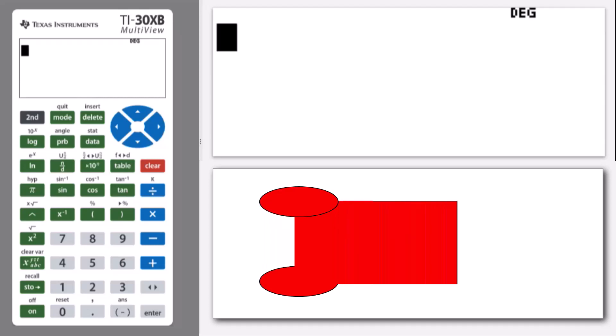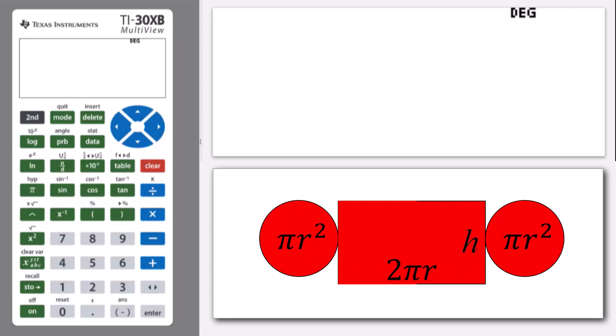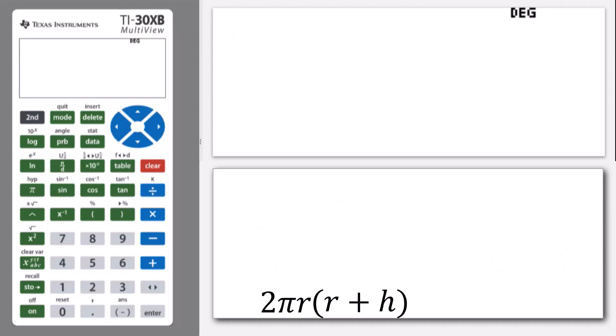And there are two ways we can write the surface area formula. We can write it as 2πr² plus 2πrh, or we could factorize that to 2πr and then in a bracket r plus h. Let's start off with 2πr² plus 2πrh.